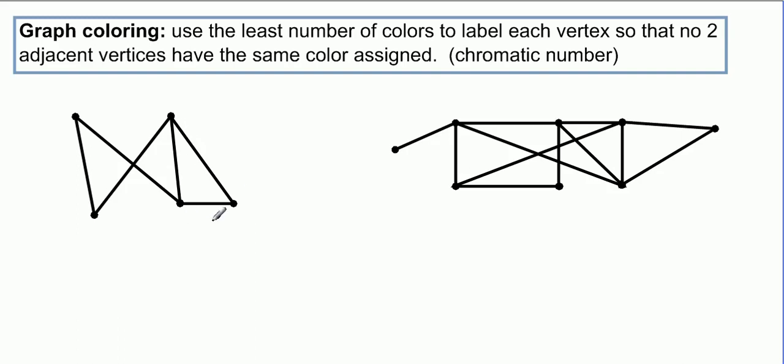Now one thing you can sort of notice right away, if you have a triangle like this, a circuit of three, where all three of these vertices are connected to each other, they're going to have to be three different colors. So you can sort of get a nice easy start and do red, green, and blue for those three colors, and then see if you can continue on from there without introducing any new colors.